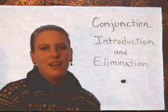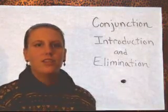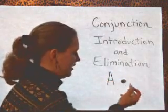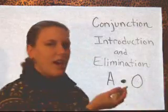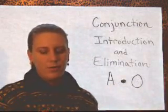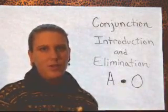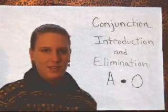Like saying, I have an apple and an orange. You can write that A and O, or A dot O. And that expresses that both ideas are true. The first idea is true, and the second idea is true.